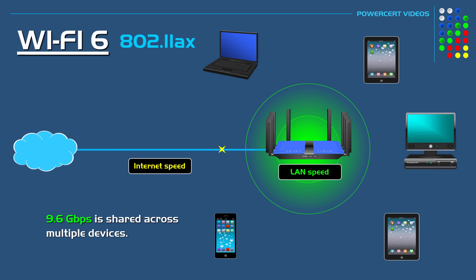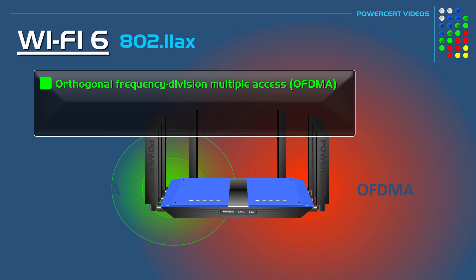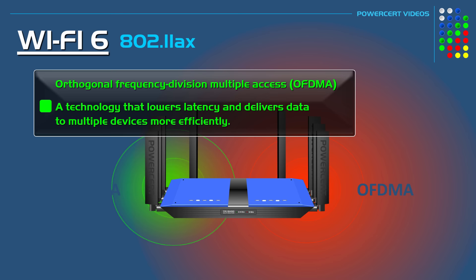This does not mean that your internet speed will increase. However, it will make it seem like it's faster because of the technology that has been implemented in Wi-Fi 6. Now one of these technologies is Orthogonal Frequency Division Multiple Access, or OFDMA. This technology lowers latency and delivers data to multiple devices more efficiently.